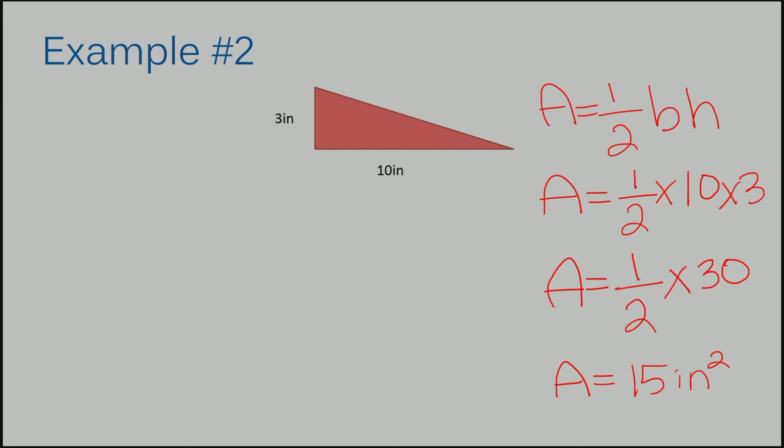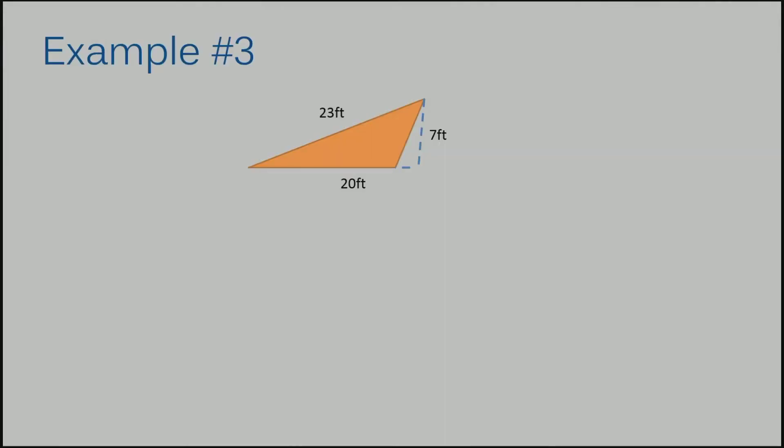Let's move on to example number three. Here's a case where we have more information than we need. I'm going to start by rewriting the formula again so I can make sure I actually pull out what I need and leave what I don't need because that would definitely give me the wrong answer. Area equals one half base times height. My base in this case is 20 and my height...